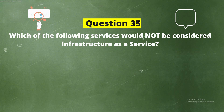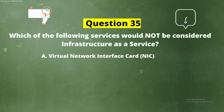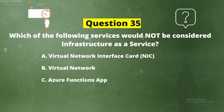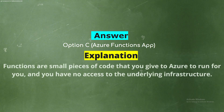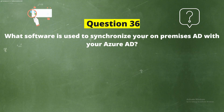Question 35: Which of the following services would not be considered infrastructure as a service? The options are: Option A, virtual network interface card (NIC); Option B, virtual network; Option C, Azure Functions App; Option D, virtual machine. The correct answer is Option C, Azure Functions App. Explanation: Functions are small pieces of code that you give to Azure to run for you, and you have no access to the underlying infrastructure.